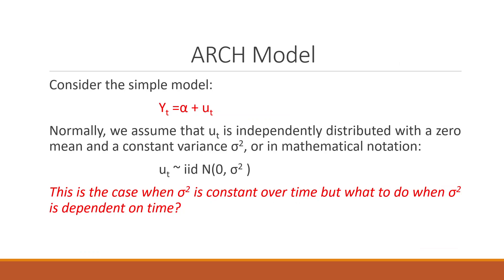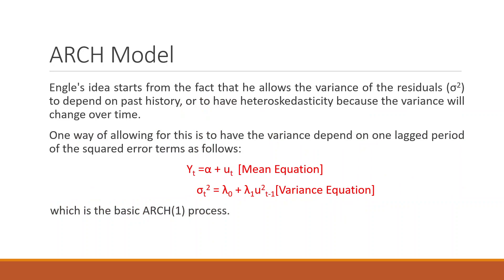If we consider the simple form of the ARCH model: Yt equals alpha plus mu_t. Normally, we assume that mu_t, the error term, is independently distributed with zero mean and constant variance sigma squared. Here we don't have any time element involved. This works when sigma squared is constant over time, but what to do when sigma squared is dependent on time? That is where the ARCH model comes in. Engle's idea starts from allowing the variance of the residual sigma squared to depend on past history — to have heteroscedasticity because the variance will change over time. To use the ARCH or GARCH model, it is necessary that heteroscedasticity is present in the residuals.